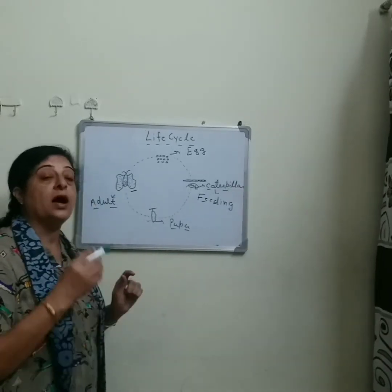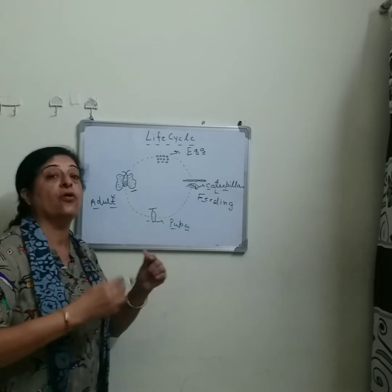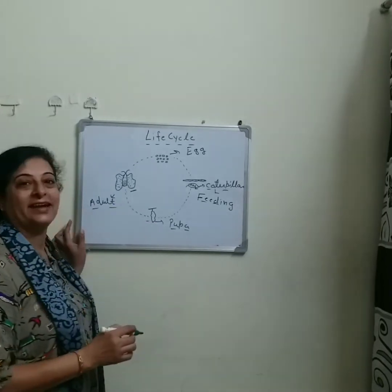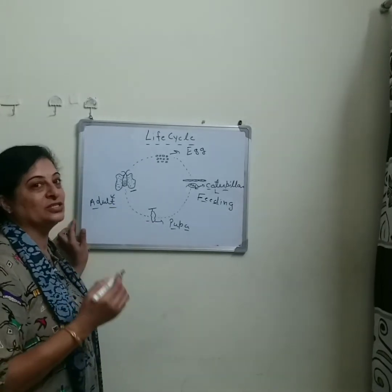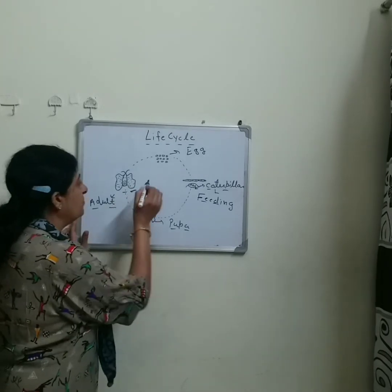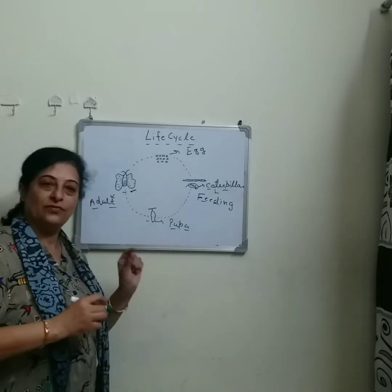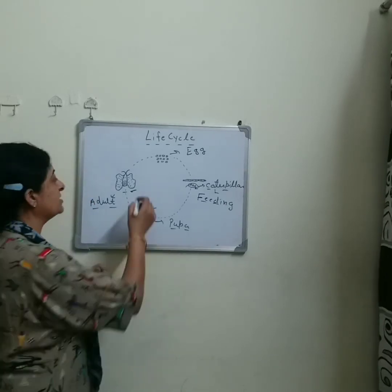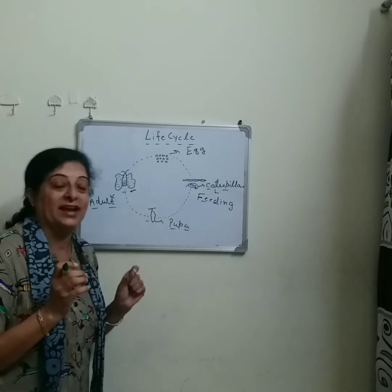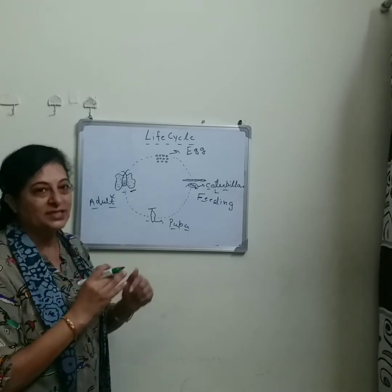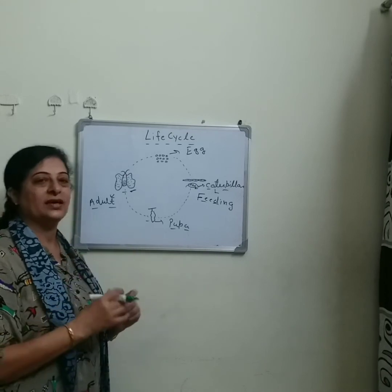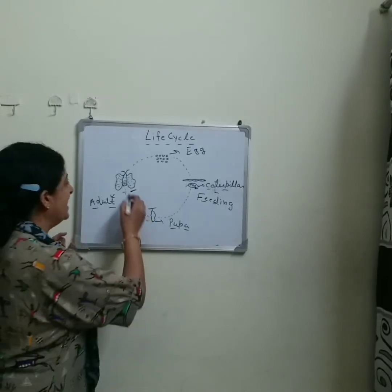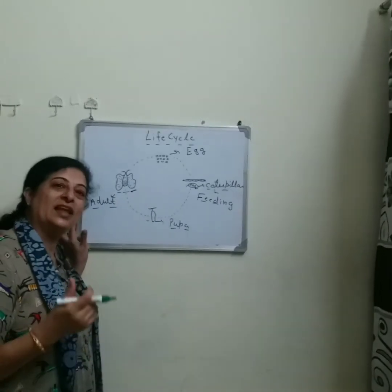In this stage, pupa undergoes a lot of changes. After some days, the pupa changes into an adult butterfly. The adult butterfly comes out from the hard outer protective shell covering. When it comes out, its wings are wet and not very strong. After some time, the wings become dry and strong, slightly increase in size, and then the butterfly is ready to fly.